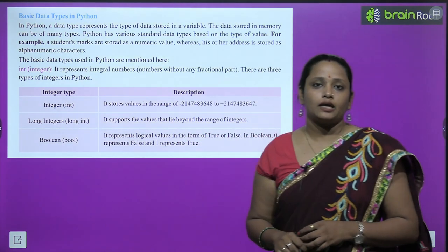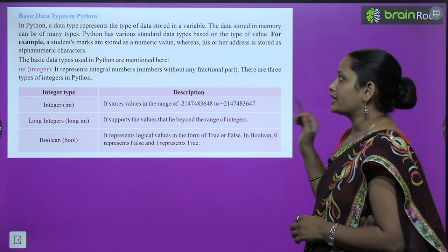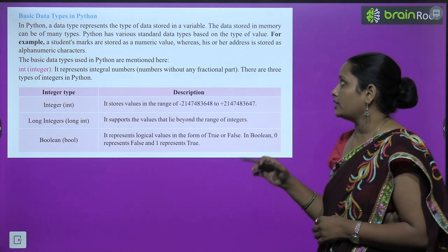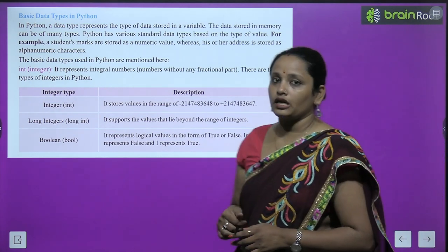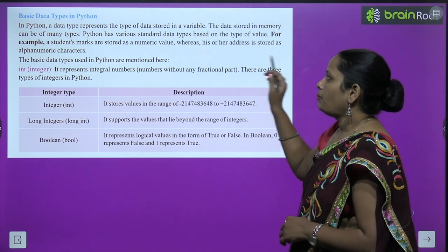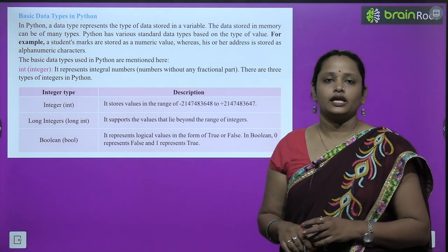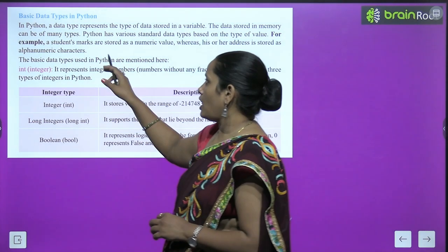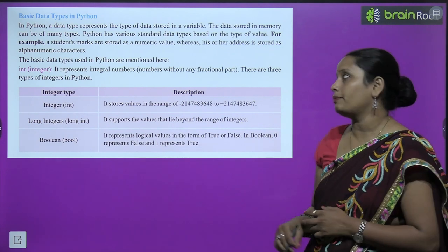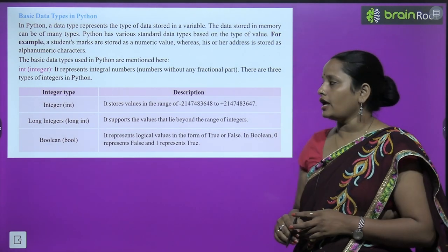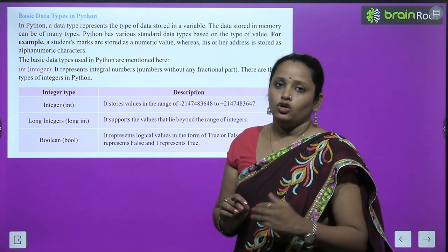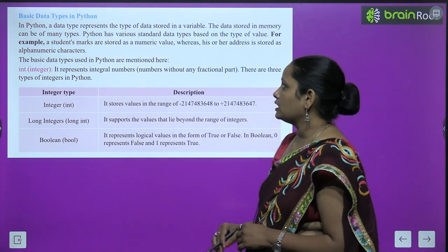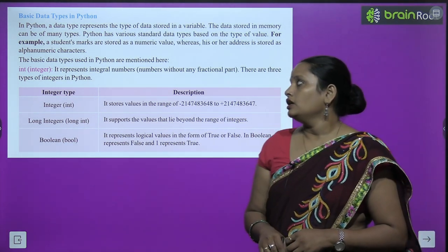Basic data types in Python: data type represents the type of data stored in a variable. The data stored in memory can be of many types. Python has various standard data types based on the type of value. For example, students' marks are stored as numeric values, whereas an address uses alphanumeric characters — both alphabets and numbers.